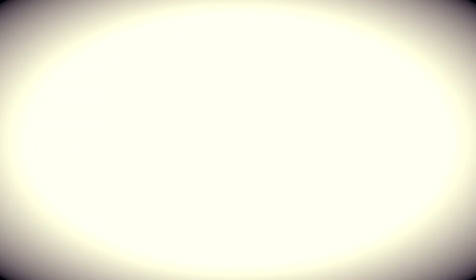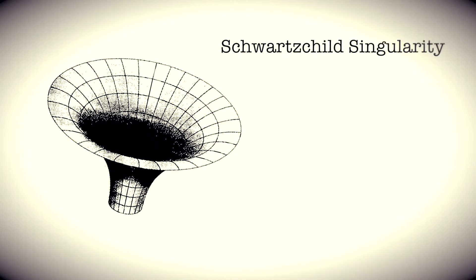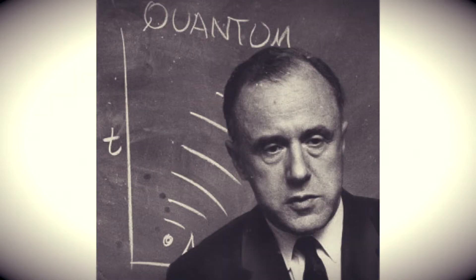His calculations yielded a solution aptly called a Schwarzschild singularity. Scientists theorized that a singularity lies at the center of a black hole — a catchy term physicist John Wheeler coined in the 1960s. Since then, black holes have caught the public imagination. Thanks, Brian, that was really informative.